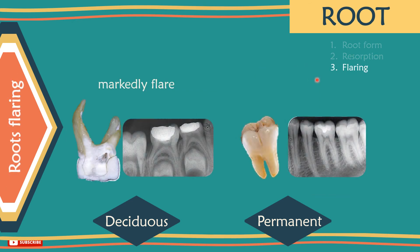Number 3 – Flaring: primary roots are markedly flared apart to accommodate the development of permanent tooth buds underneath. Their roots are also flattened mesiodistally, as are their canals within. On the other hand, permanent roots are less flared and may even be fused in some cases.